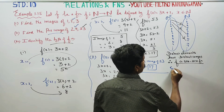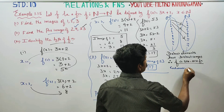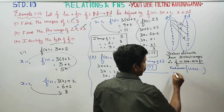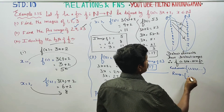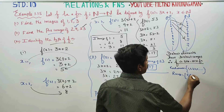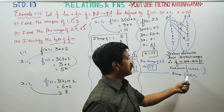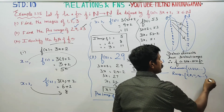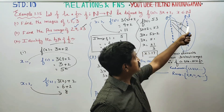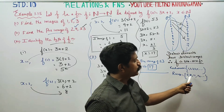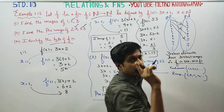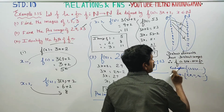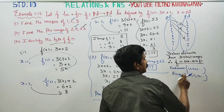The co-domain is 1, 2, 3, 4, 5, 6, 7, 8, 9, 10 and so on, with all values represented. But if you look at the range, it contains only 5, 8, 11 and similar values produced by f(x) = 3x+2. The co-domain contains values like 1, 2, 3, 4, 6, 7, 9, 10 and more. The co-domain is represented by both values.